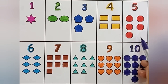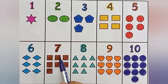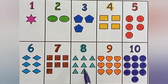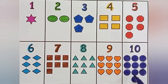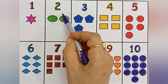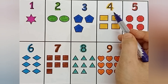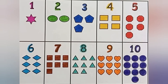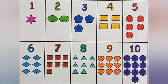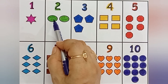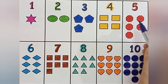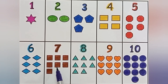Number 5: five octagons. Number 6: six rhombuses. Number 7: seven squares. Number 8: eight triangles. Number 9: nine hearts. Number 10: ten circles. One star shape, two oval shape, three pentagon shape, four rectangle shape, five octagon shape, six rhombus shape, seven square shape, eight triangle shape, nine heart shape, ten circle shape. Colors: pink, green, blue, yellow, red, sky blue, brown, peacock green, orange, violet.